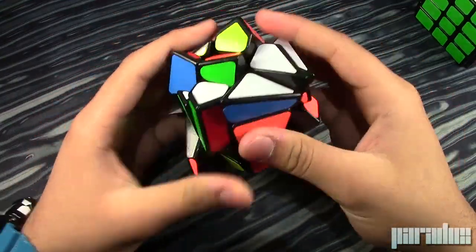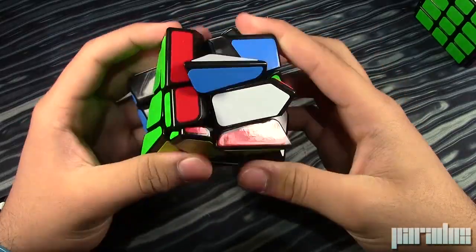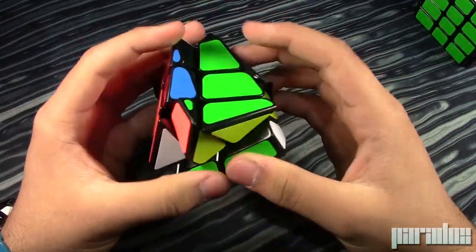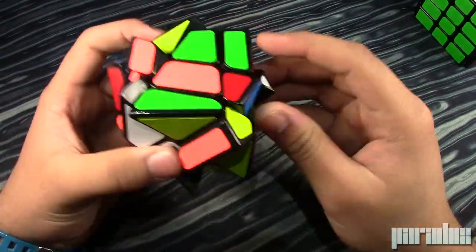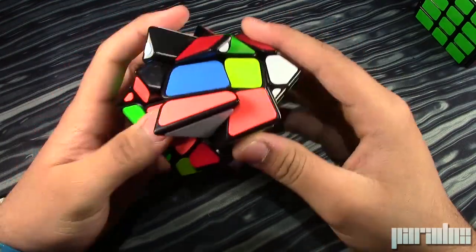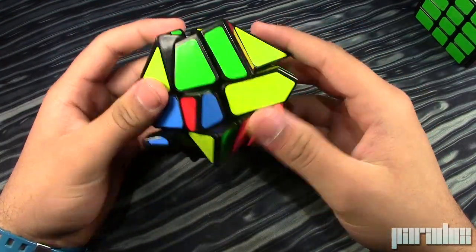It is a shape mod, so I'm pretty sure you solve it just like a 3x3. It shouldn't be that hard, and you shouldn't require any extra algorithms. And it's kind of weird aligning this puzzle, because it's hard to figure out where each piece goes. That's only because it's a new puzzle, but once I keep playing with it for a bit, I should get used to it.